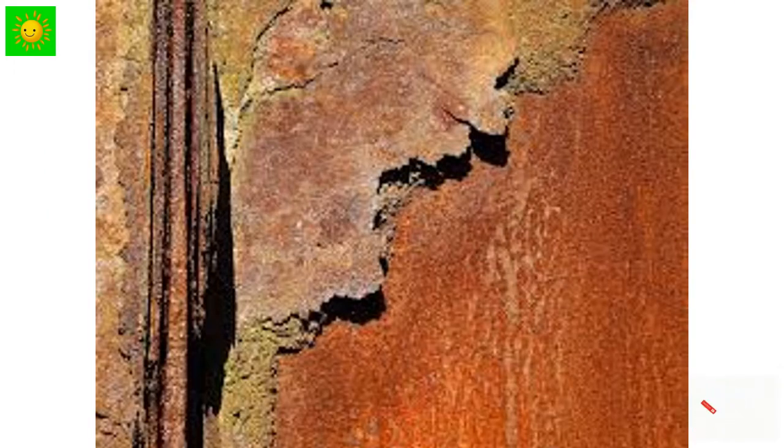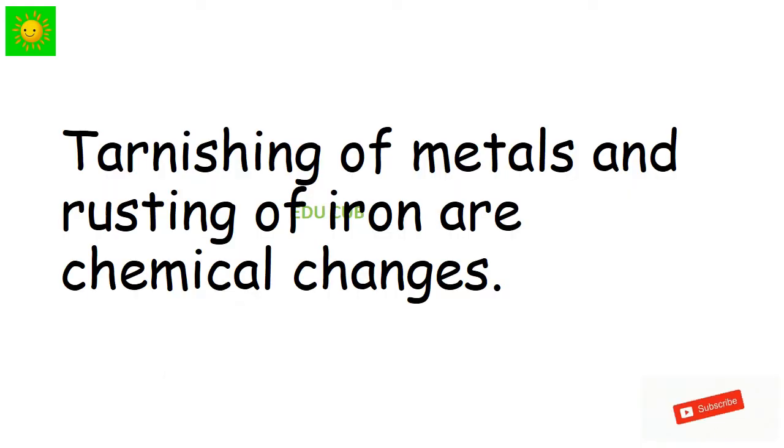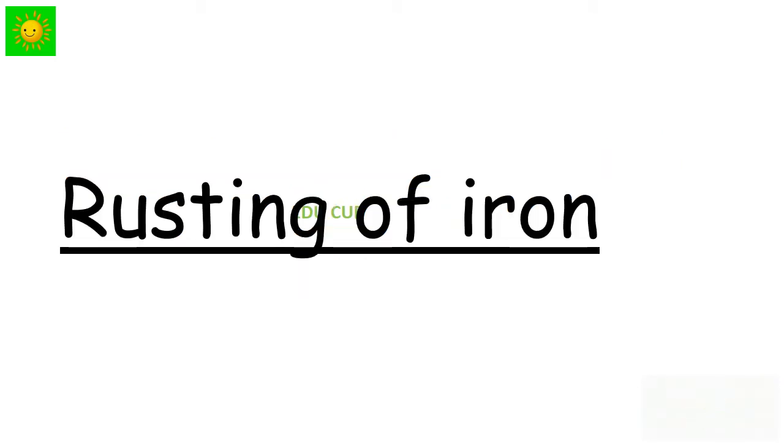A substance called rust is formed on the surface of iron due to tarnation. This is reddish brown in color and is called iron rust. This process is called rusting of iron. Due to tarnation and rusting, surfaces of metals corrode. This is called corrosion of metals. Tarnation of metals and rusting of iron are chemical changes.